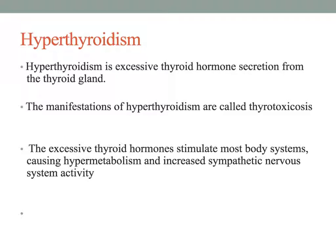Hyperthyroidism often occurs spontaneously and can result from the excessive intake of thyroid hormones. Graves' disease is by far the most common cause of spontaneous hyperthyroidism in the United States. It is an autoimmune disorder characterized by autoreactive antibodies. Graves' disease accounts for 80% to 90% of hyperthyroid cases, peaking in young adults aged 20 to 40 years old.